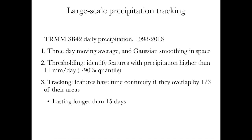We are using object-tracking methods — tracking each individual event — with TRMM satellite data. The steps are: first, smooth the precipitation in time and space because it's very noisy; then apply thresholding to find contiguous structures higher than 11 mm/day, which is beyond the 90th percentile; and finally track the features found in each precipitation snapshot.